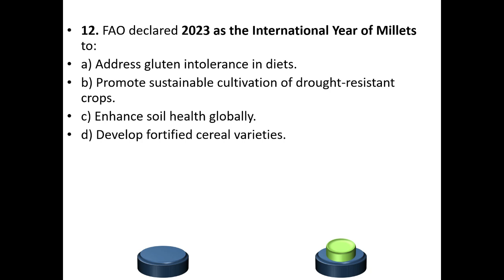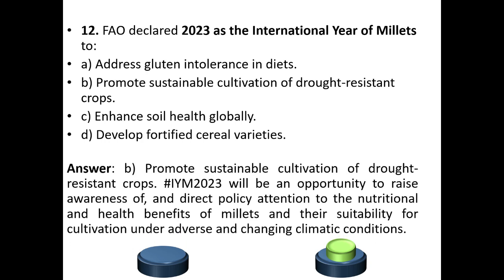Question 12: FAO declared 2023 as the International Year of Millets. The purpose was: a) to address gluten intolerance in diets, b) to promote sustainable cultivation of drought-resistant crops, c) enhance soil health globally, or d) develop fortified cereal varieties. The answer is option B — promote sustainable cultivation of drought-resistant crops.